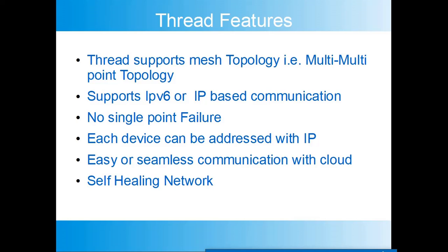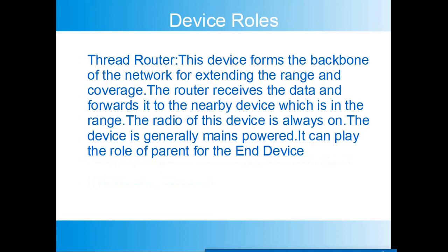So what are the main features of Thread? Thread supports mesh topology — that is multi-to-multipoint communication. It supports IPv6 or IP-based communication. There is no single point of failure in Thread Protocol, which we will see later. Each device can be addressed with an IP address, so there is easy and seamless communication with the cloud — this happens because of the border router. Thread can also provide a self-healing network.